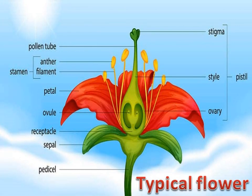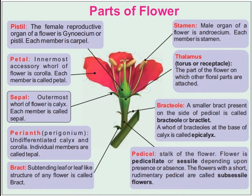The flower is considered a typical flower if it contains four different floral whorls. The petals of the corolla are colorful and scented to attract insects to the flower, which helps in the sexual reproduction process. The androecium is the male reproductive organ of the flower as it produces pollen grains. The gynoecium is the female reproductive organ of the flower as it produces ovules.